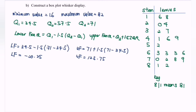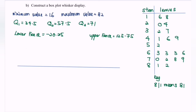Next, construct the box-and-whisker plot. Draw a number line and locate the numbers from the minimum to maximum using a suitable scale: 10, 20, 30, 40, 50, 60, 70, 80, 90. Then mark and label the five-number summary and also the lower fence and upper fence.